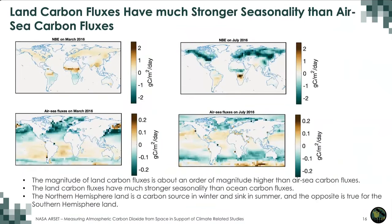In the next few slides we look at features of surface carbon fluxes and their links with characteristics of atmospheric CO2 concentration. The top two panels show net biospheric exchange NBE in March and July. It shows a stronger seasonal cycle over the northern hemisphere than the southern hemisphere, corresponding to the much larger seasonal changes shown earlier. The magnitude of ocean carbon fluxes shown in the bottom two panels is an order of magnitude smaller than land carbon fluxes. You will learn how to make these plots with Jupyter Notebooks later.